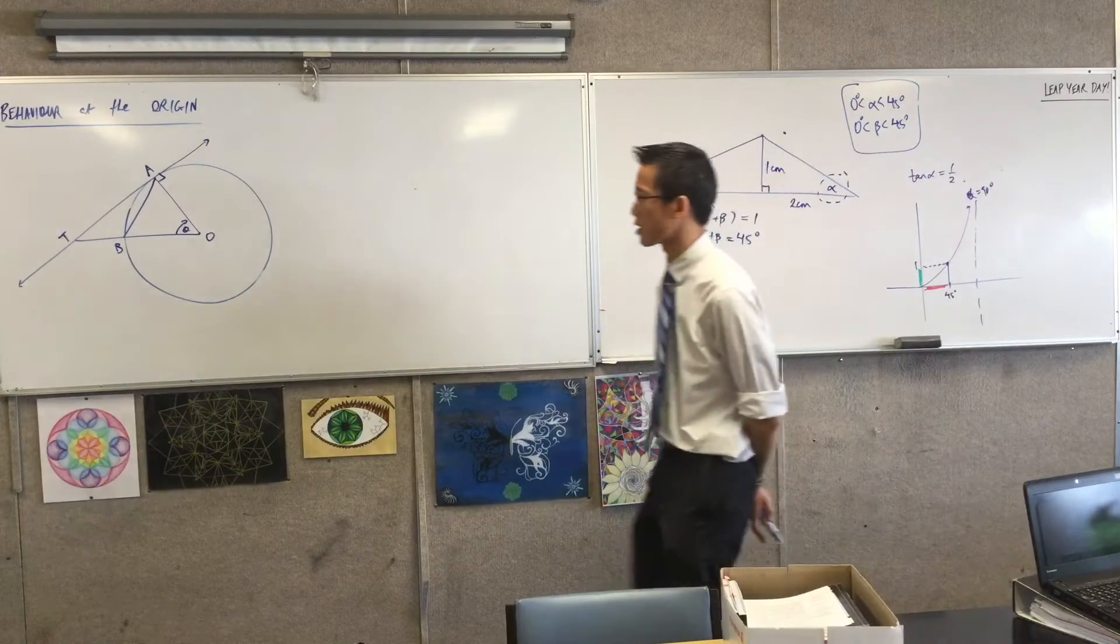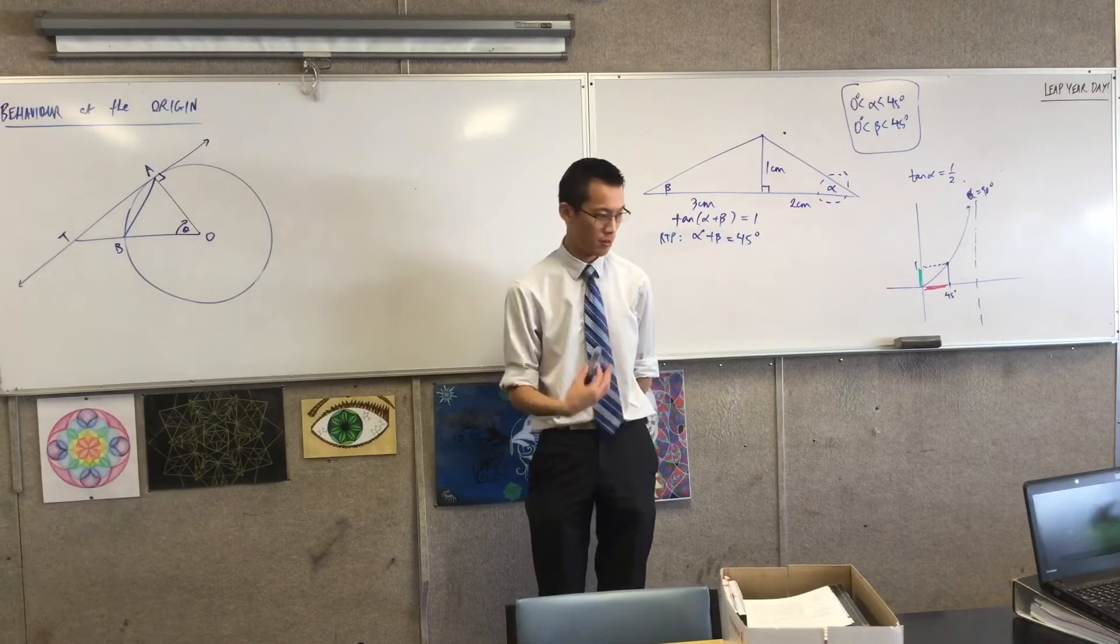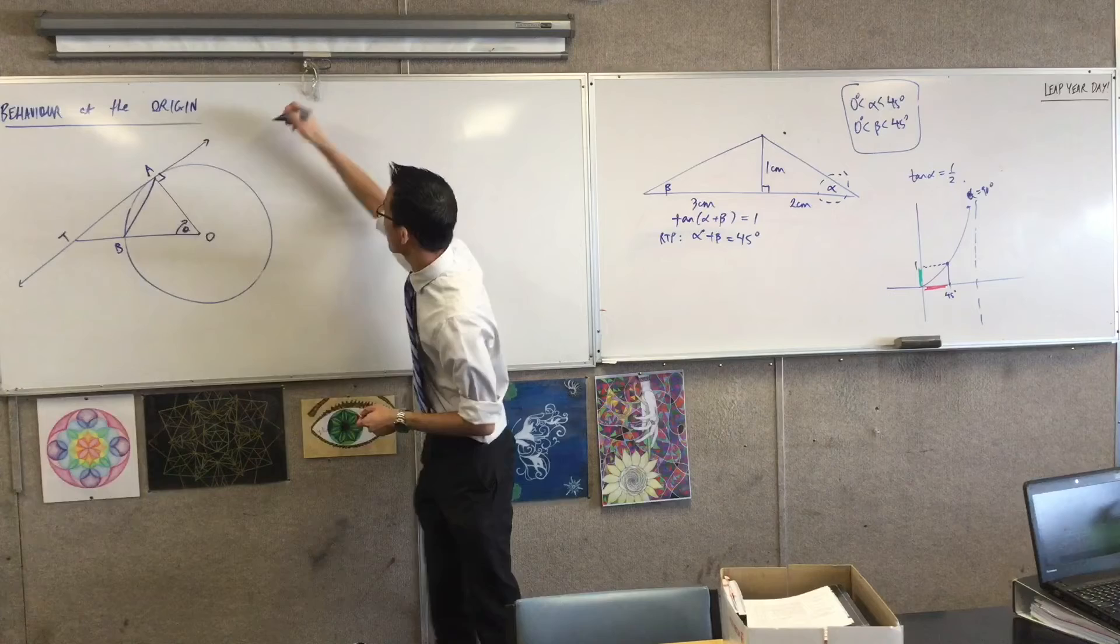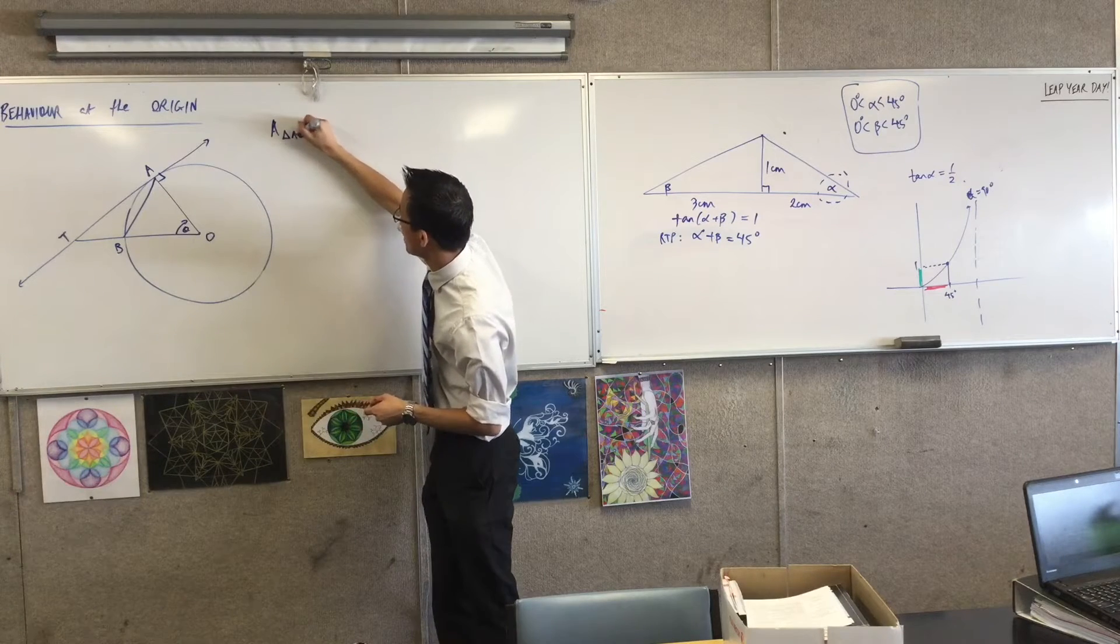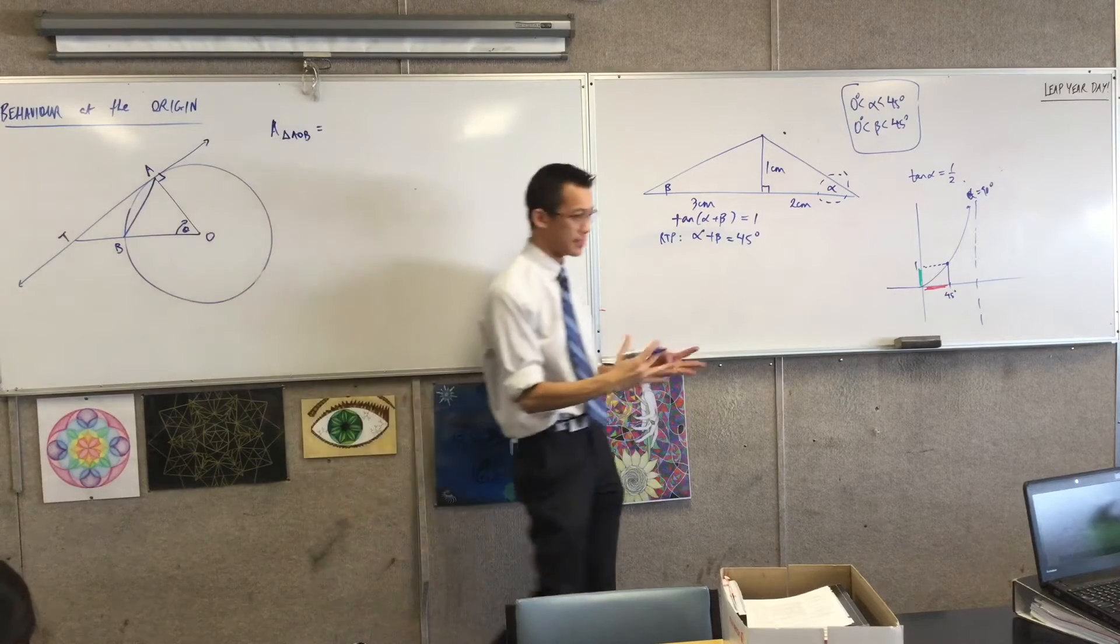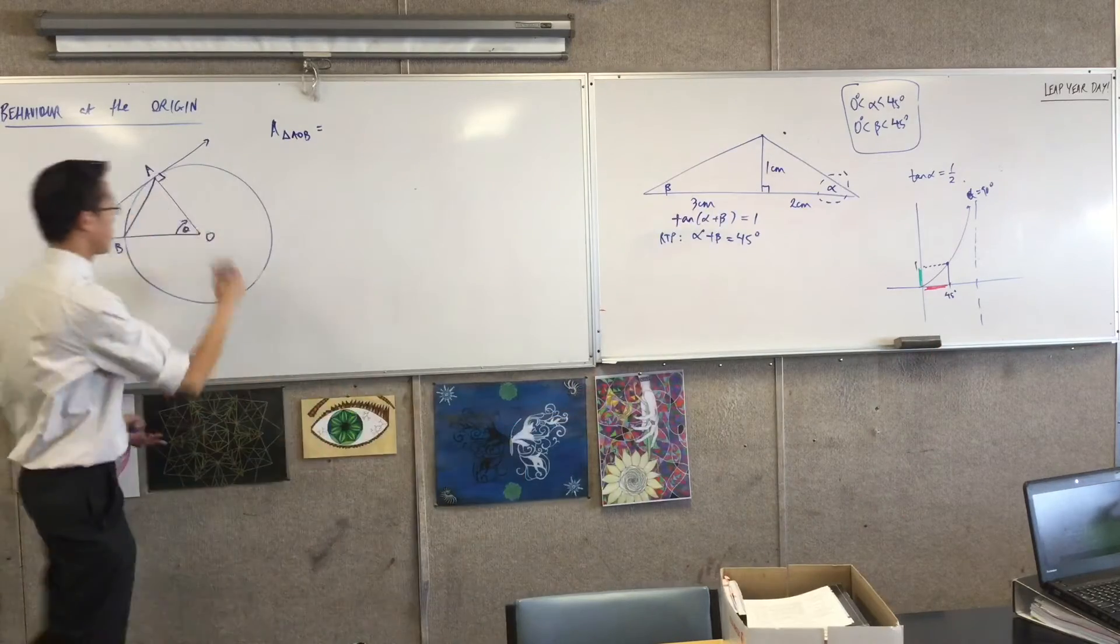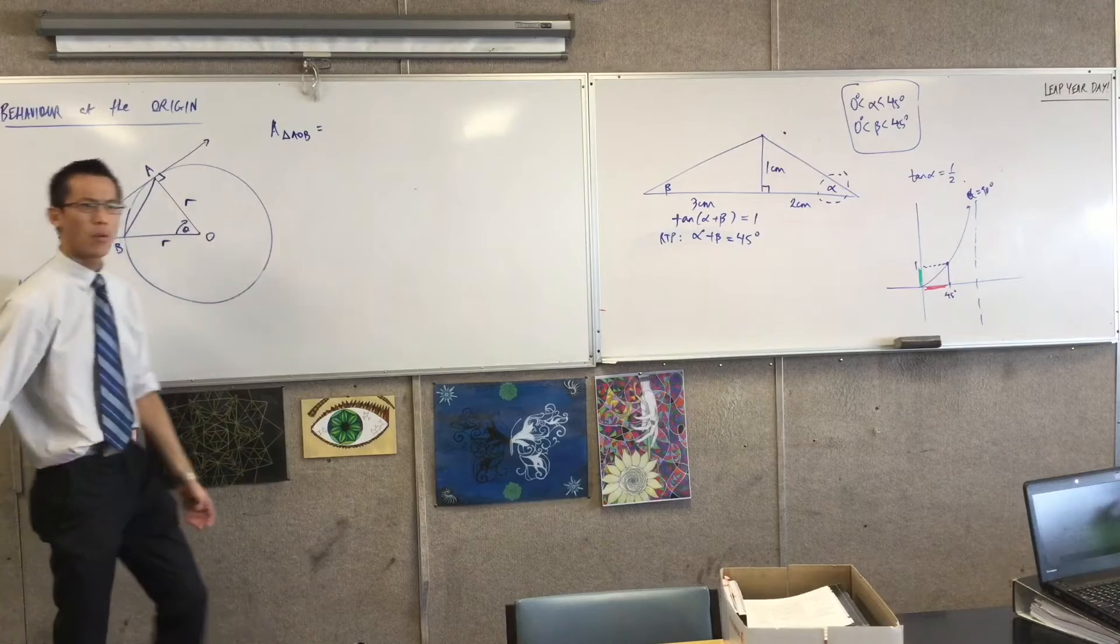Now let's go through these one at a time. We'll start from the inside. If I think about this area of triangle AOB, the inside one - it's a circle, you don't know anything about its measurements, so let's just call its radius R. What is the area of that triangle?